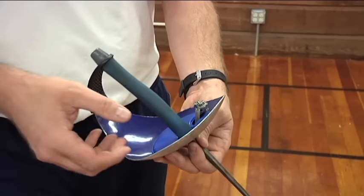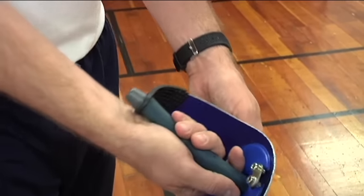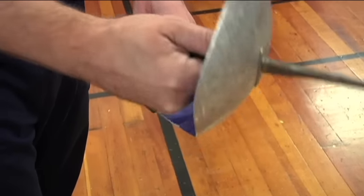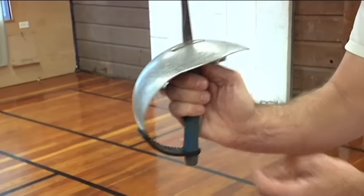And to hold the saber, you simply put your thumb on top, wrap your fingers around like this and make certain that the bottom of the saber is at the bottom of your hand here.